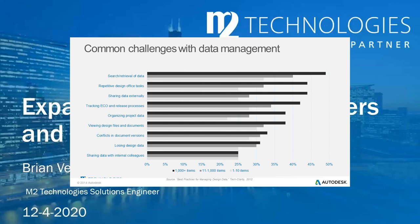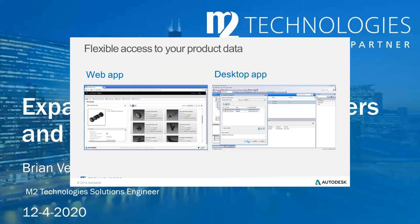Vault Office provides a couple of different access options. The first is a web application, referred to as the Vault Thin Client. This requires no software at all to access files — you just open a web browser, go to a configured link for your vault, and log in. Once logged in, you can search, view, and even mark up designs, see all the property information, and check files in or out of the vault.